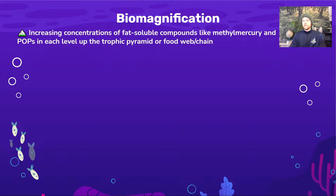Biomagnification refers to the idea that fat-soluble compounds — persistent organic pollutants like PCBs, or methylmercury in the case of seafood — build up and accumulate at higher and higher concentrations in organisms at higher trophic levels.